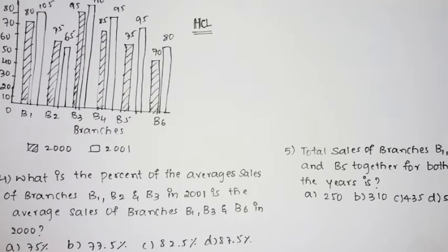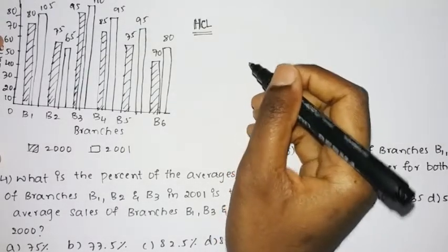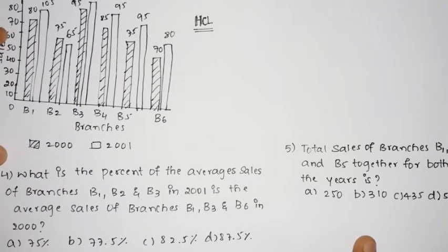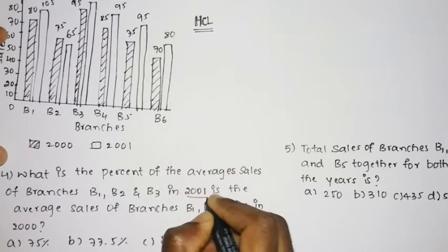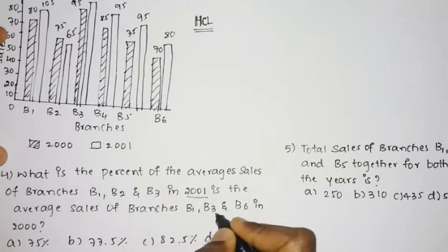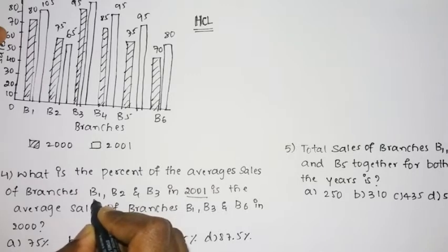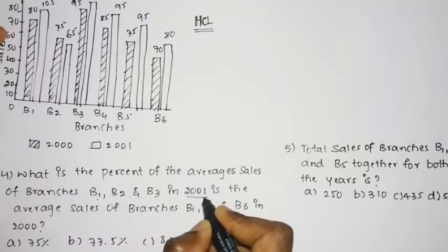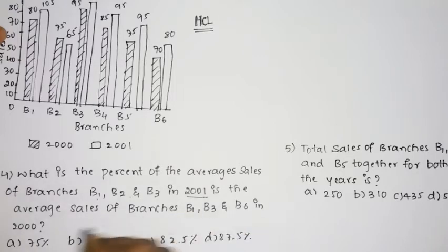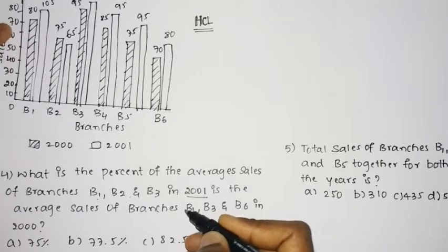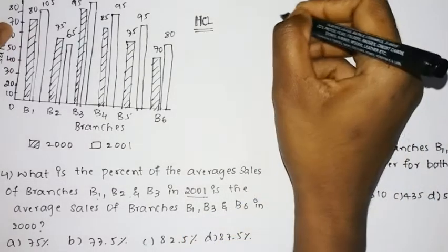Hello friends, welcome to Insight Learners. In this video we shall discuss the remaining two questions of the data interpretation that was asked in the HCL. The fourth question is: what is the percent of the average sales of branches B1, B2, and B3 in the year 2001 to the average sales of branches B1, B3, and B6 in 2000? We need to calculate each average separately and then find the required percentage.